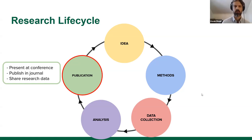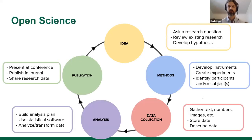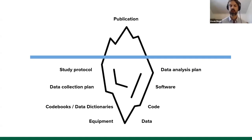A publication is really only the tip of the iceberg. If it's published in a closed journal where you need to pay for access, that limits access even more. Open Science is about not just opening up the publication phase, but opening up our analysis, collection, methods, and the idea itself — our study protocol, data collection plan, code books, analysis plan, software, and code. The more open we make research, the more accessible and equitable it becomes.